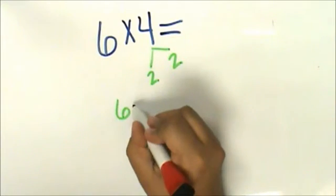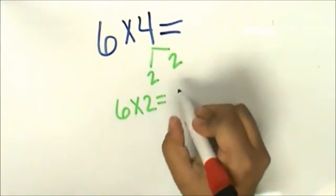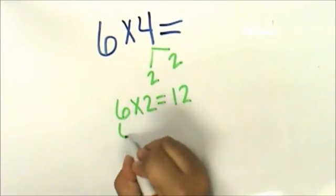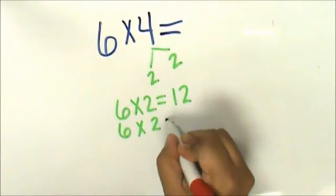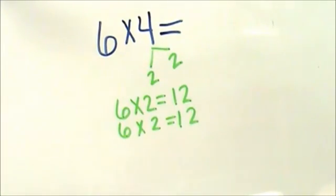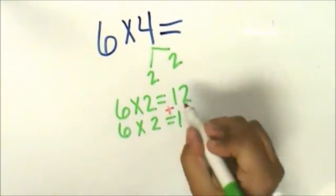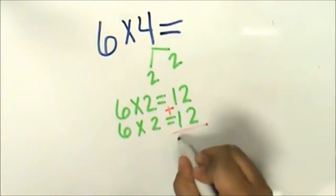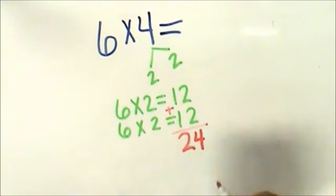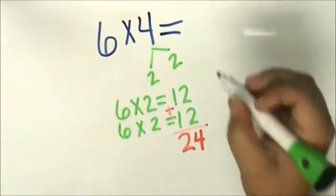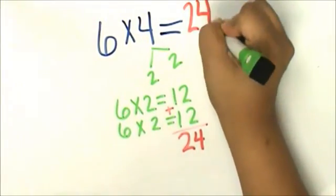I'm going to multiply 6 times 2 and that's 12, 6 times 2 and that's 12. Now I can quickly add 12 plus 12, 24. The product of 6 times 4 is 24.